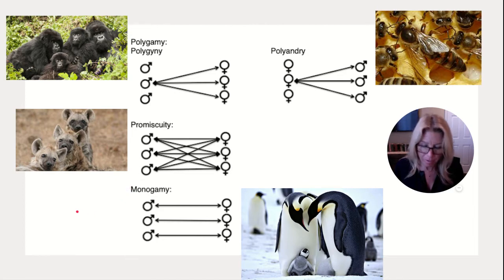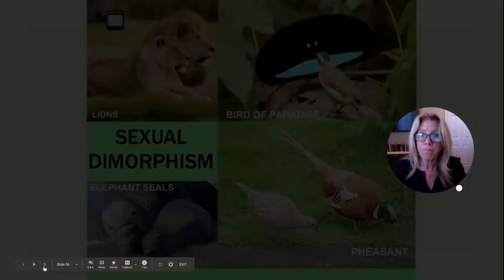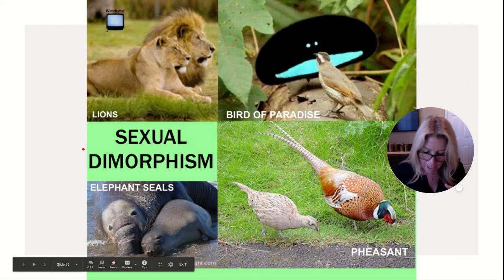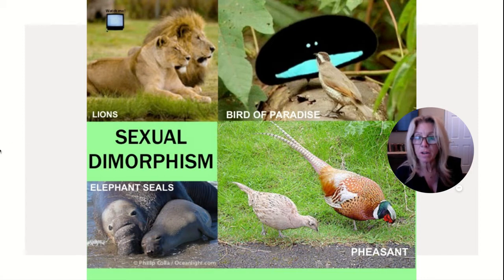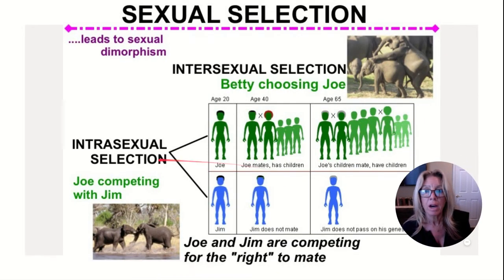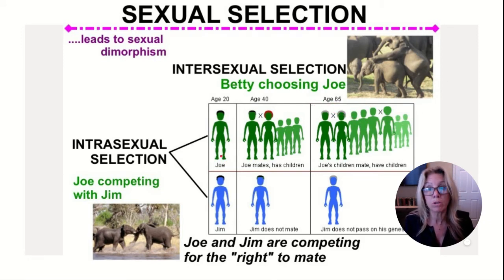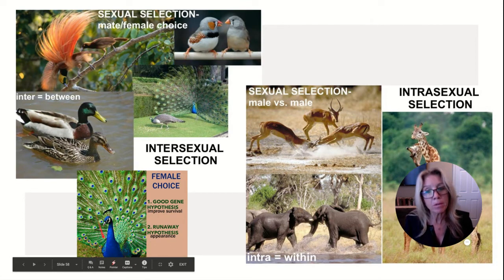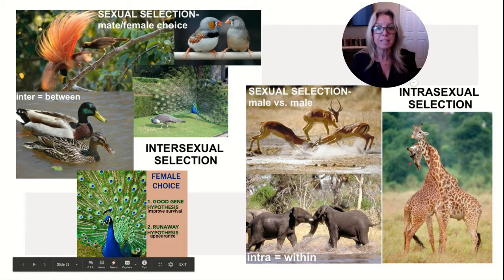Promiscuity is shopping around on either side and can sometimes be adaptive. Sexual selection is a form of natural selection that favors features increasing an animal's chance of mating. Sexual dimorphism is where males and females look different from each other. Intrasexual selection is when males compete with each other to inseminate the female; intersexual selection is when the female chooses between males.